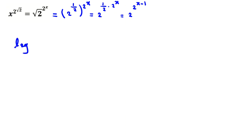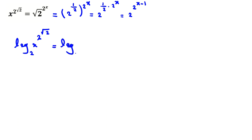Now we are ready to take log in base 2, because everything is expressed as 2 to the power of something. If we take log in base 2, the left side will be x to the power of 2·root 2 — there are three powers — and the right side is log base 2 of 2 to the power of x minus 1.